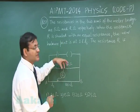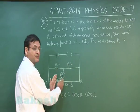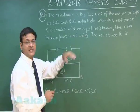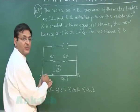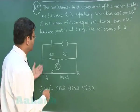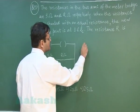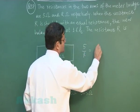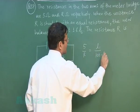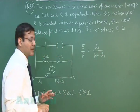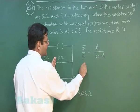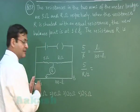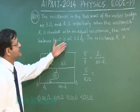So the net value of this thing will be R/2. This will be decreasing, so naturally the balance point has to be shifted. The new balance point is at 1.6L₁. As I said it has to be increased. So the resistance R is - make the equation very simple: 5/R, you see here first equation 5/R is L₁/(100-L₁). This is the first equation you will be obtaining. But in the next go since R has been shunted by another resistance, so this is 5/(R/2), and this is now L₁ has been made 1.6L₁, so this is 1.6L₁/(100-1.6L₁).